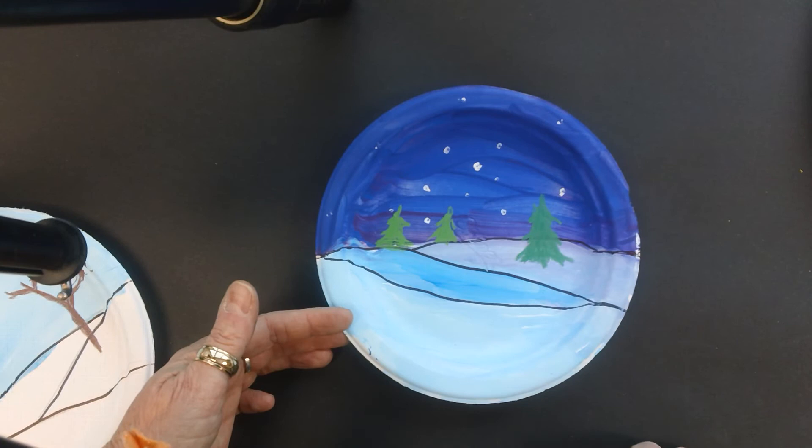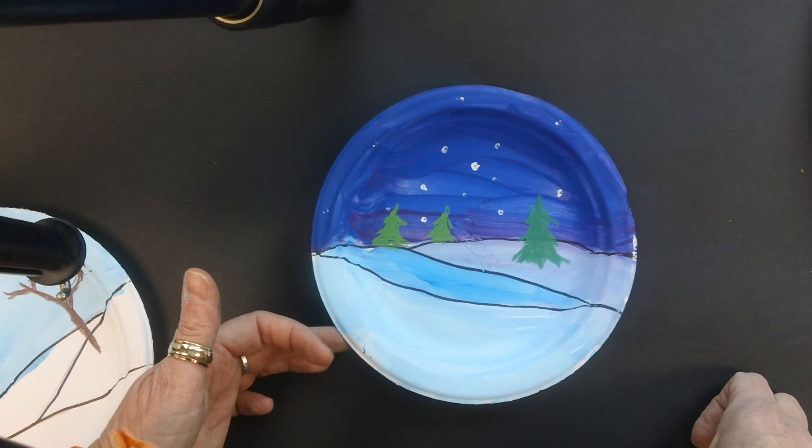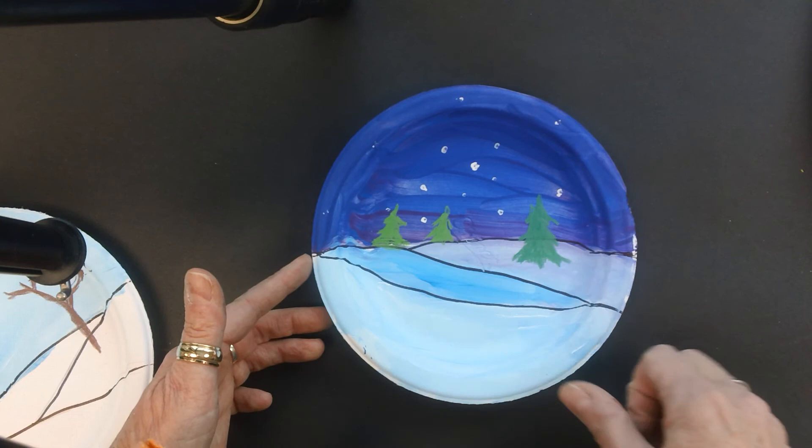This is a nighttime sky, and I just put some dots of white paint to indicate stars. And again once my paint was dry, I went back in with some art stick and some permanent marker to make things stand out.